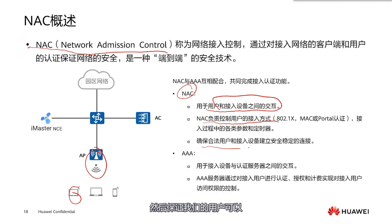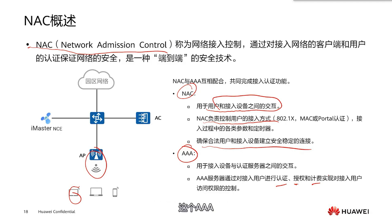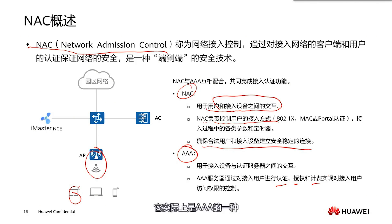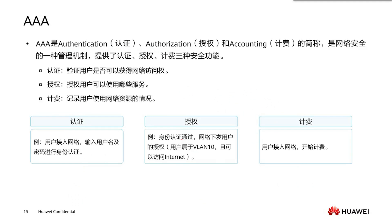The second thing is 3A — which stands for Authentication, Authorization, and Accounting. As we mentioned, the RADIUS server is used to verify user passwords. It is a type of 3A, used to determine if our users are eligible to connect to our network and if they are eligible to use our network resources. This is the relationship between NAC and 3A.